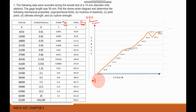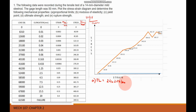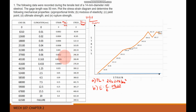For letter A, the proportional limit: this is where the linear proportion between stress and strain stops. From the graph, the proportional limit equals 246.20 N/mm² (MPa). For letter B, the modulus of elasticity equals stress over strain: 246.20 divided by 0.0012, which equals 205,166.67 N/mm².